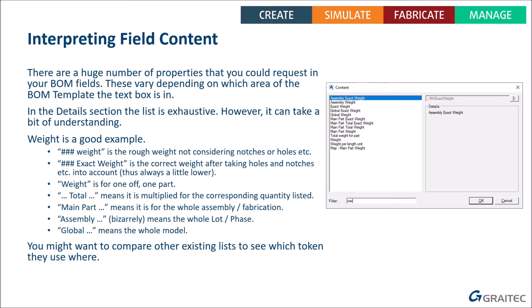The same naming logic applies to paint and possibly one or two other properties. If you know those rules you can decipher many other properties in the list. Sometimes it's still confusing — for example, if you're looking for surface area, 'Area' won't work as expected. Instead, look at what tokens existing lists like the material list use for similar purposes. It turns out surface area is called 'Paint', not 'Area' — and it uses something like Assembly Paint. Looking at other existing lists to see which tokens they use is a good way to figure out which property goes where.